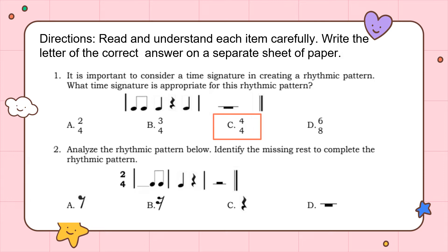Let's have number 2. Analyze the rhythmic pattern below. Identify the missing rest to complete the rhythmic pattern. Is it letter A, letter B, letter C, or letter D? Which is the correct answer?